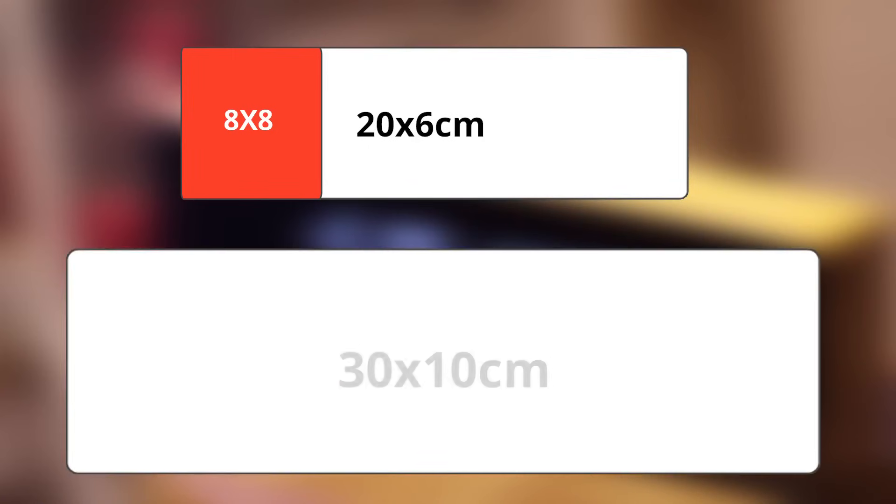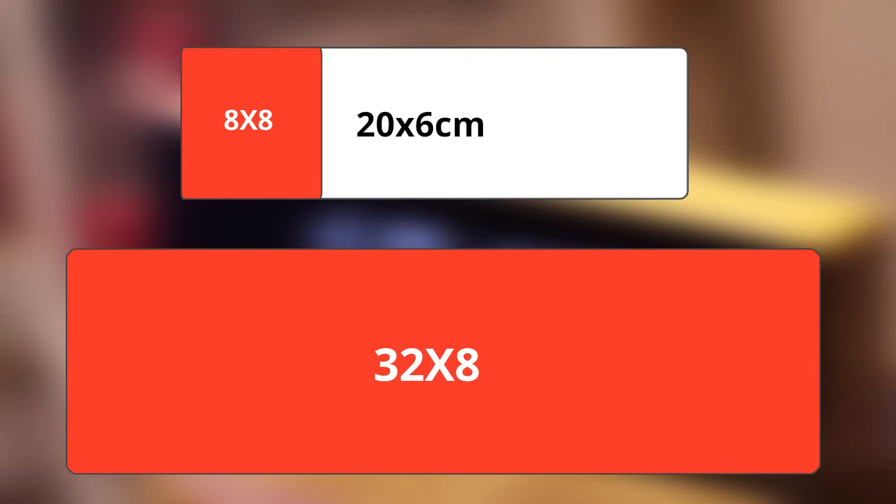Another very important thing is that the original clock is 20 by 6 centimeters and it only has 8 by 8 color pixels, while mine is 30 by 10 centimeters and has a full screen of 32 by 8 colors.